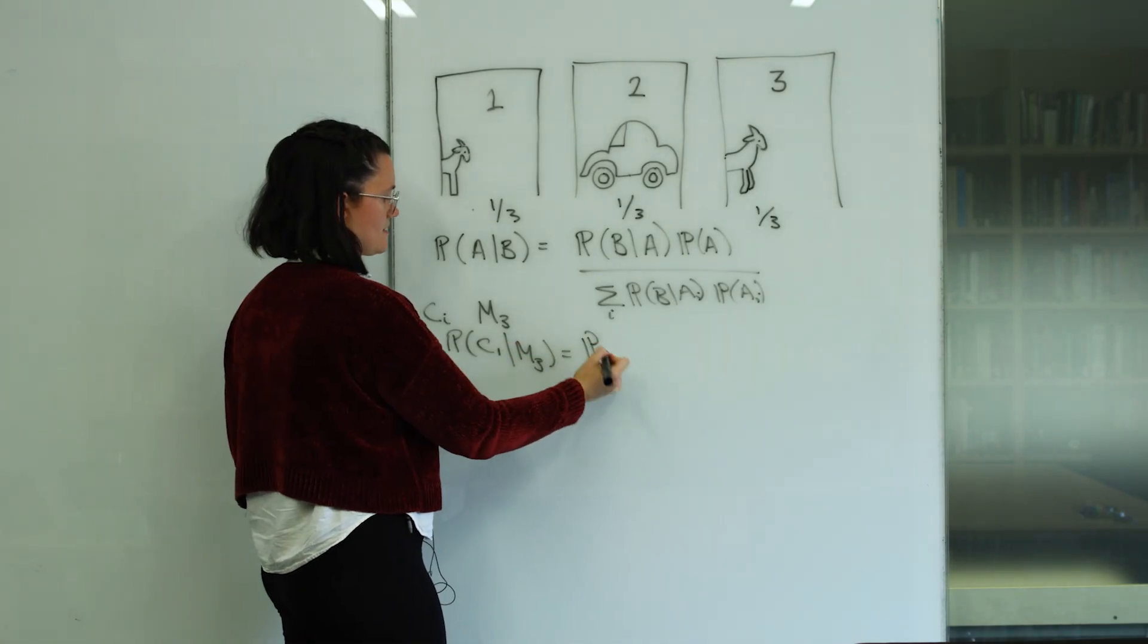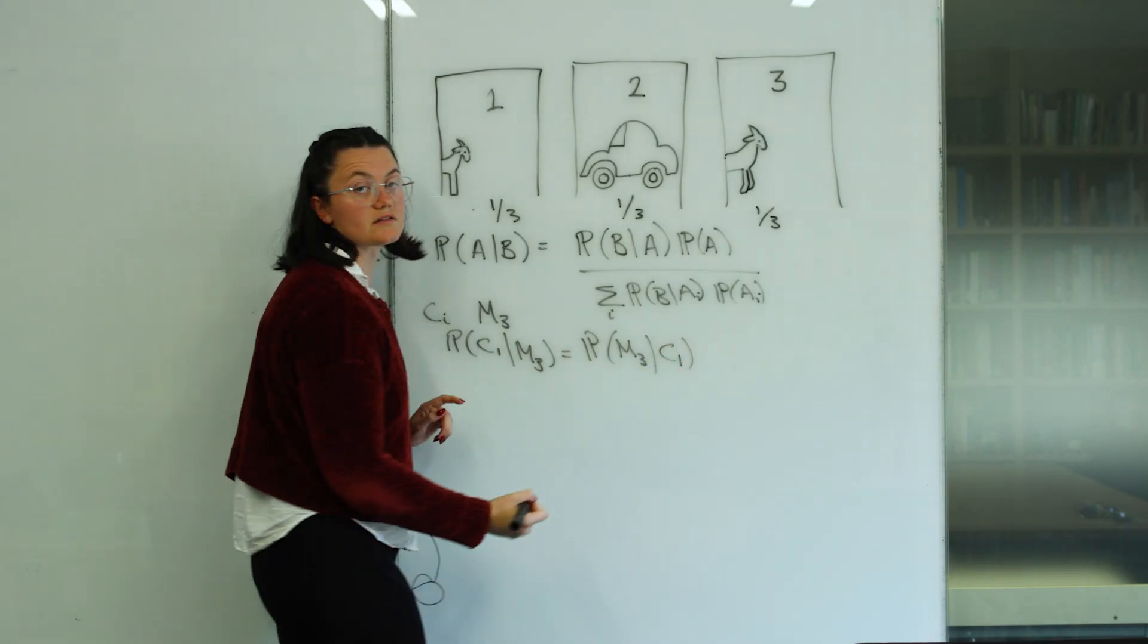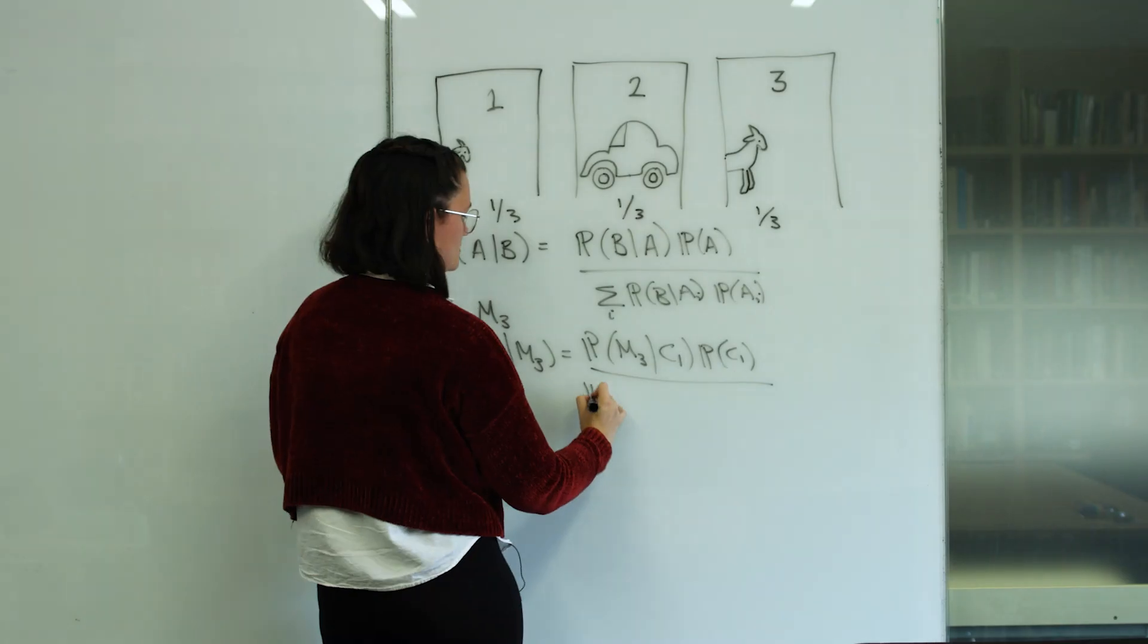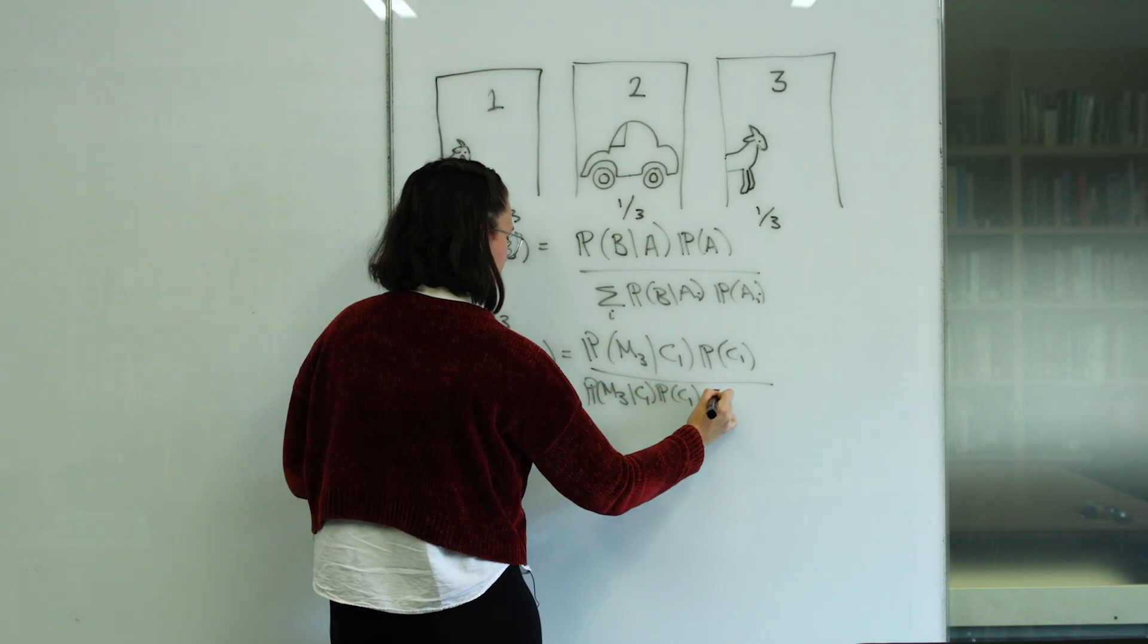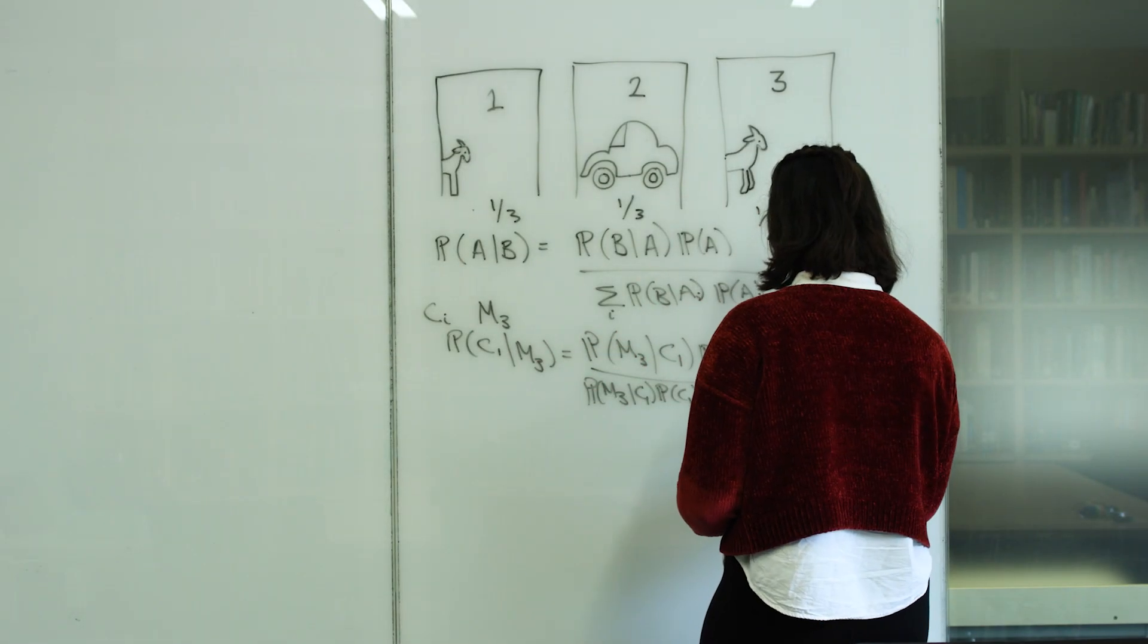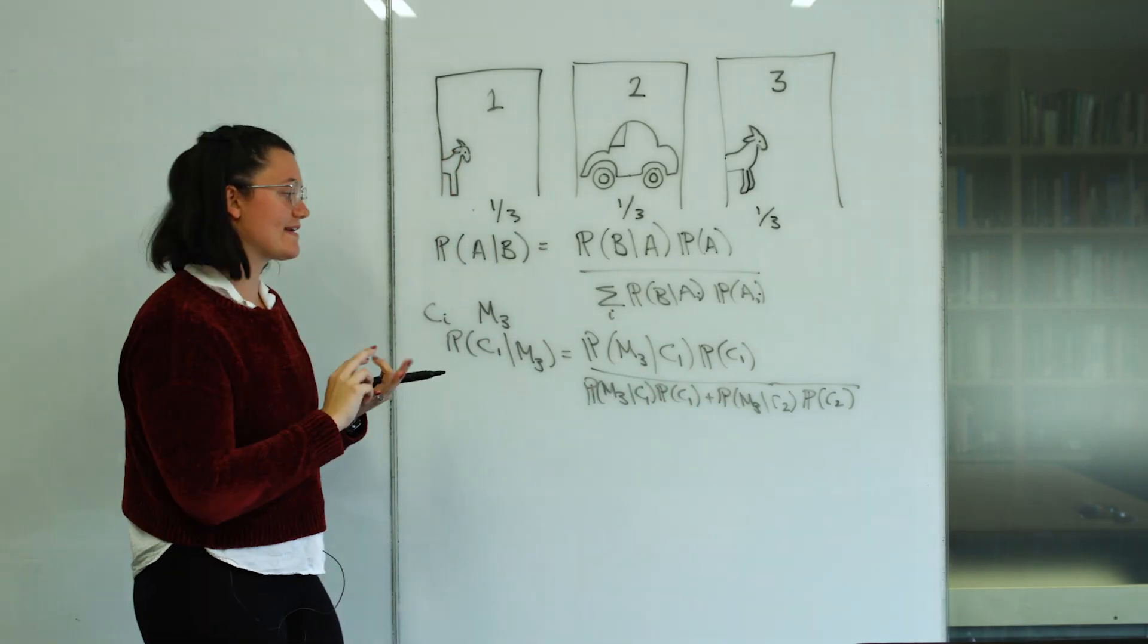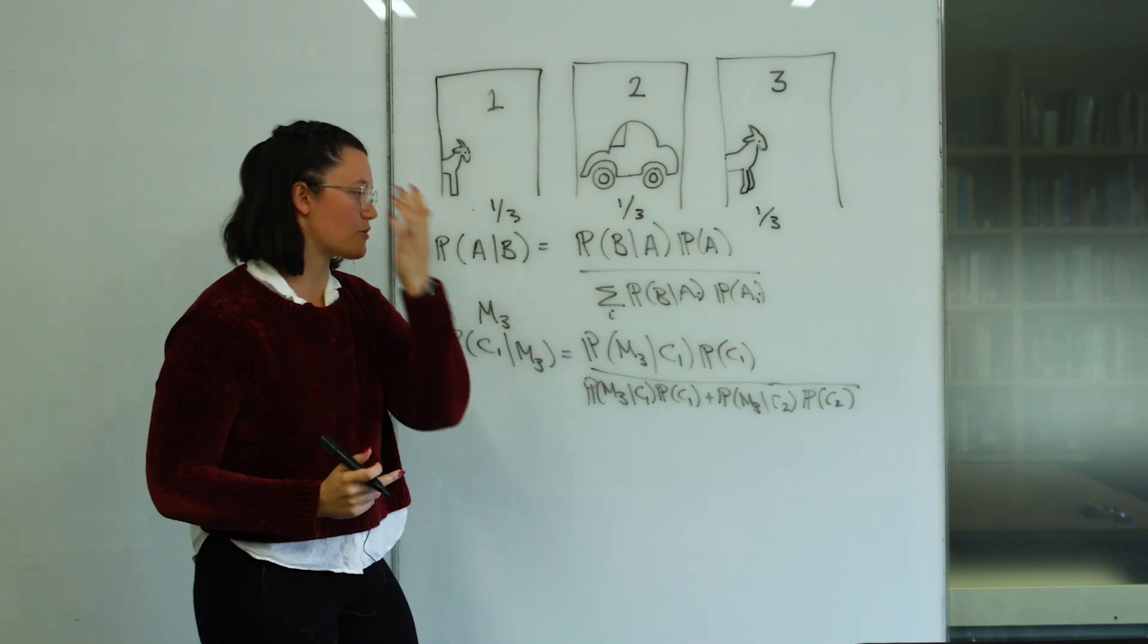And this is going to be given by the probability that Monty opens door number three, given that the car is actually behind door number one, times the probability that car is behind door number one, plus that and the other alternative. So I'll just write it out here quickly. Monty opening door three. Sorry, I'll come over here. And you'll notice that in the bottom, I haven't written down the probability that Monty opens door three, given the car is behind door three, because he's never going to reveal the prize. He's always going to show you a goat at that first step. So we can assume that that probability is zero.